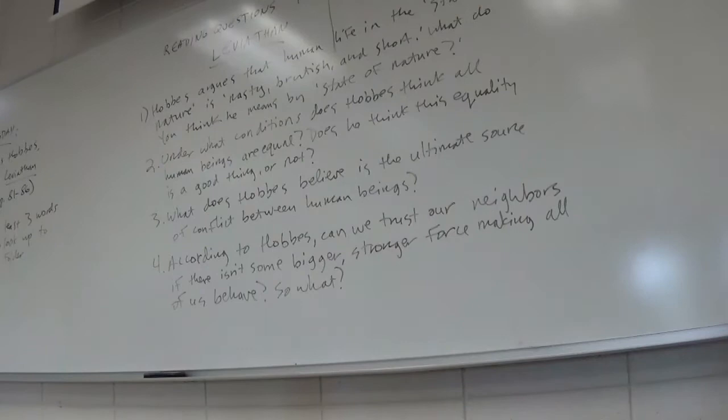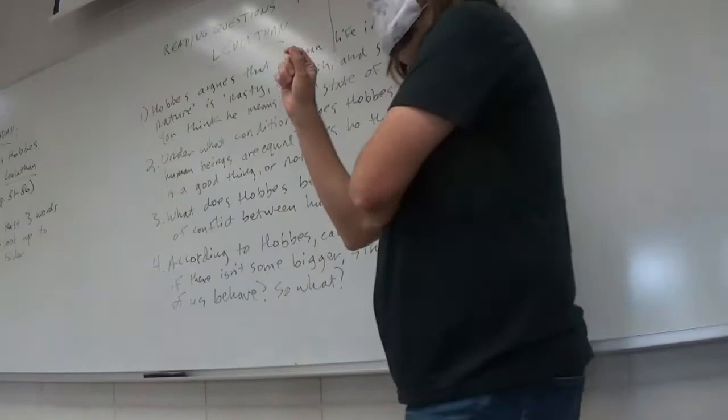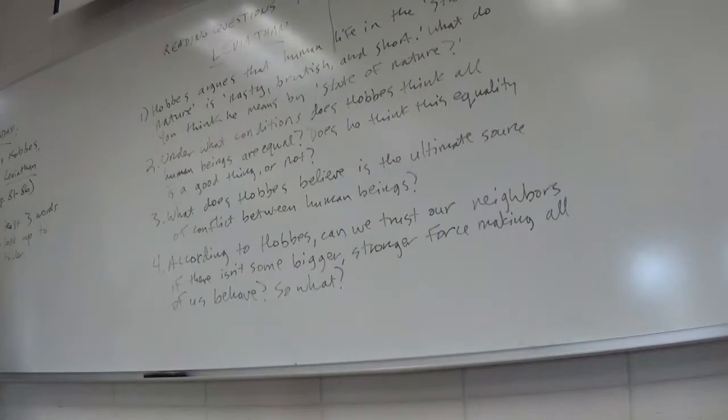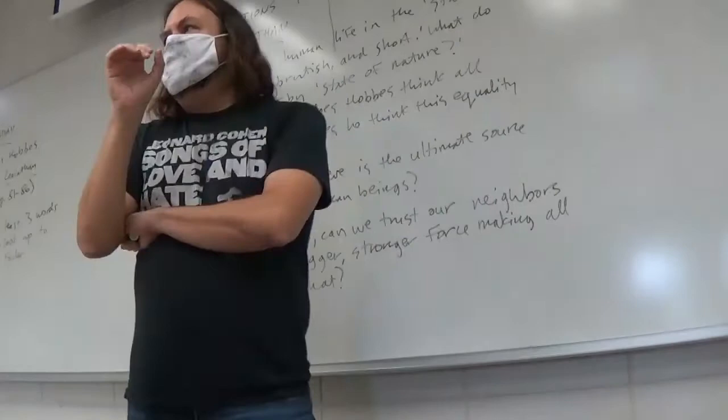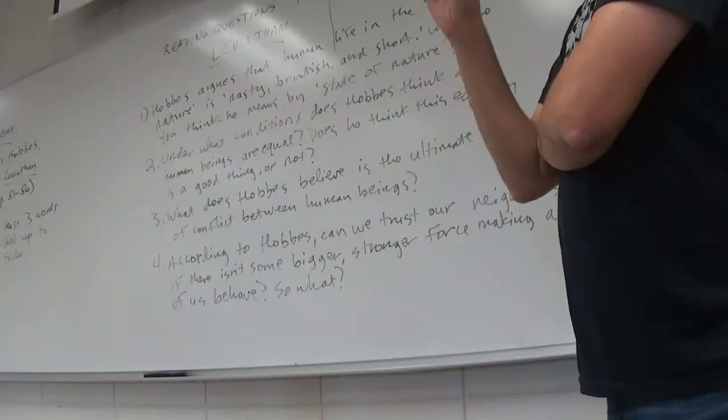Okay, so all you need to do for next time is read the selection from Thomas Hobbes. It's about five pages, and submit at least three words you had to look up to the vocab folder. I'm going to warn everybody to go slowly and carefully with this, and to maybe read it more than once, because this is 17th century English prose, so it gets a little bit gnarled. If you have to go slowly with it, do so. That's probably the best way to handle it.